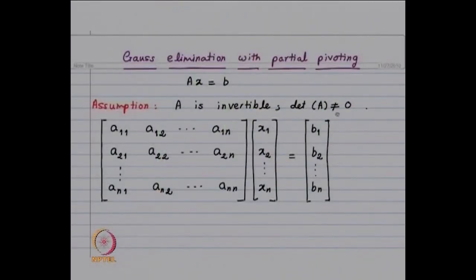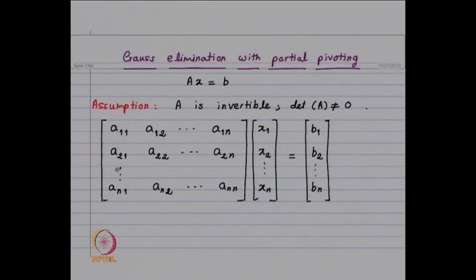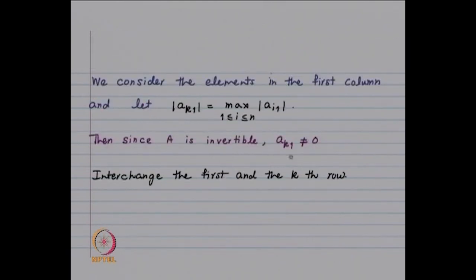Our setting is: A is an invertible matrix. We have the system Ax = b, where determinant of A is not equal to zero, and we have n equations in n unknowns. The right-hand side b_1, b_2, ..., b_n is given, and x_1, x_2, ..., x_n is the unknown vector. Since determinant of A is not equal to zero, this equation has a unique solution. What we do is first look at the first column and consider the element which has the maximum modulus. If it is in the k-th row, we interchange the first and k-th row. Since A is invertible, A_{k1} is not equal to zero, because if it were zero, then each entry in the first column would be zero, giving a zero column and making the determinant of A equal to zero.